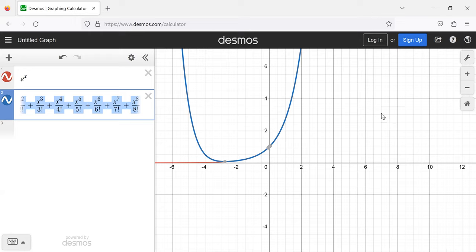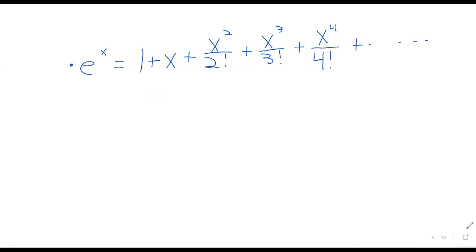If we could have infinitely many terms, the graphs would be identical. And that's the idea of the Taylor series, that a lot of functions can be thought of as infinite polynomials.